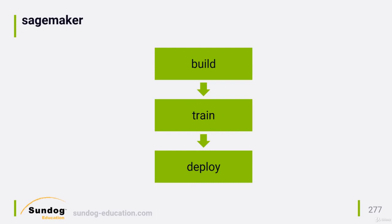Your training and test data need to be in a specific format called ProtoBuf, but Amazon provides utilities that make it easy to convert your data into this. One neat feature of SageMaker is that you can also set up hyperparameter tuning jobs, which will automatically run a series of cross-validation tests to converge on the best parameters for your model.